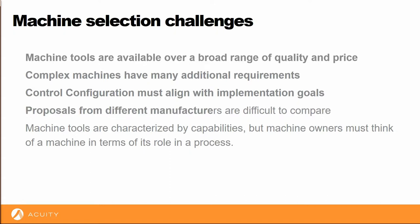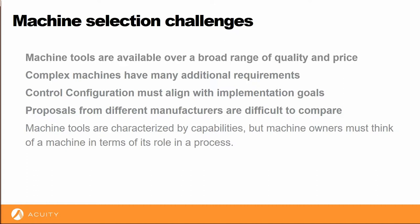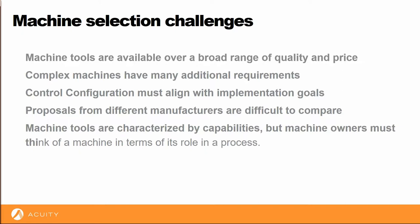Machine tool builders characterize their machines differently. They may report accuracy and repeatability differently. They may use different approaches to features which achieve a similar goal. It's easy to get lost in the numbers and features of candidate machines. We must focus on their suitability in our process.